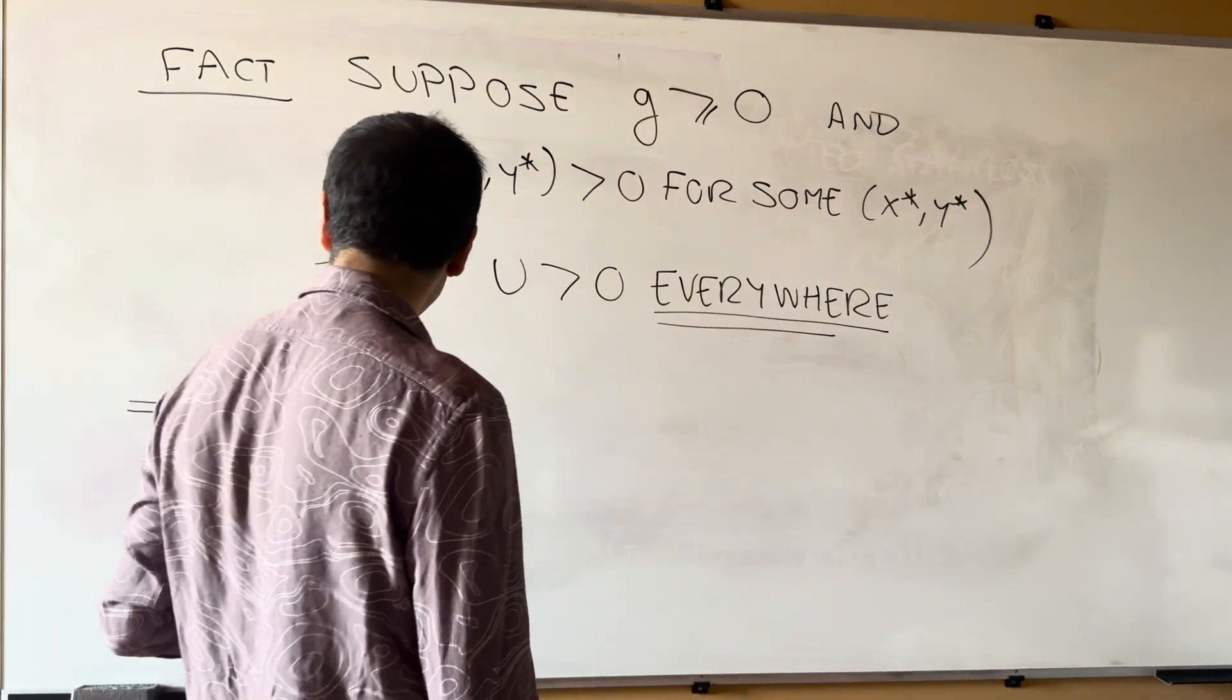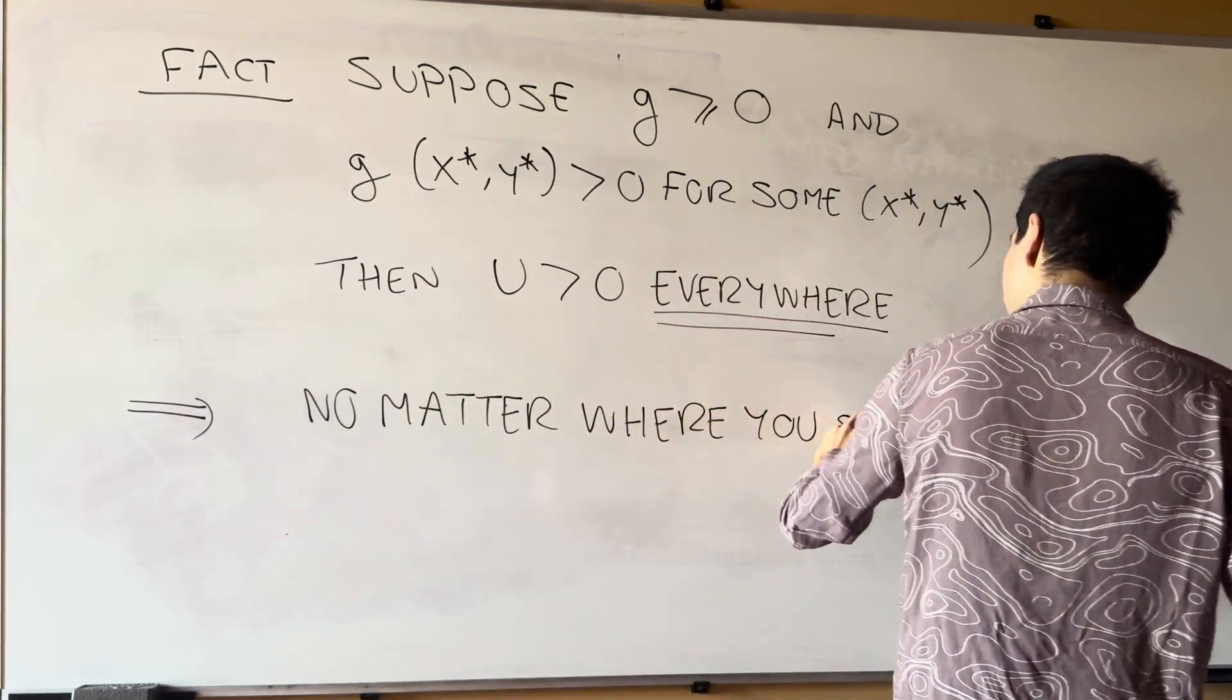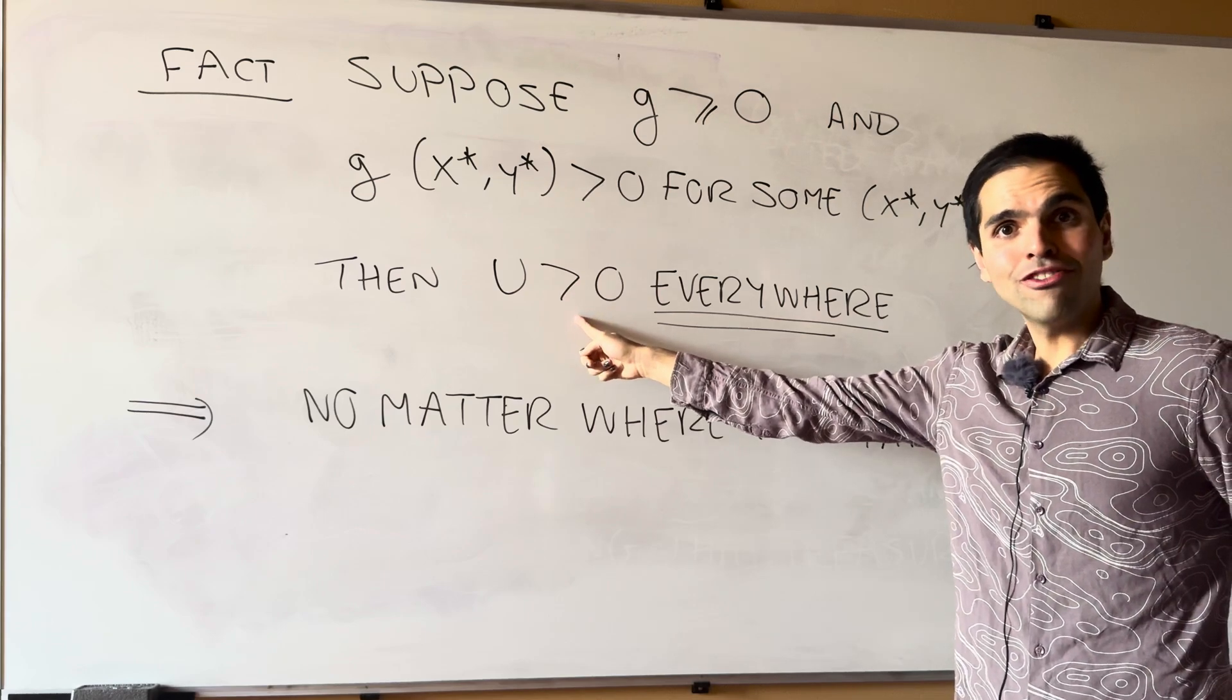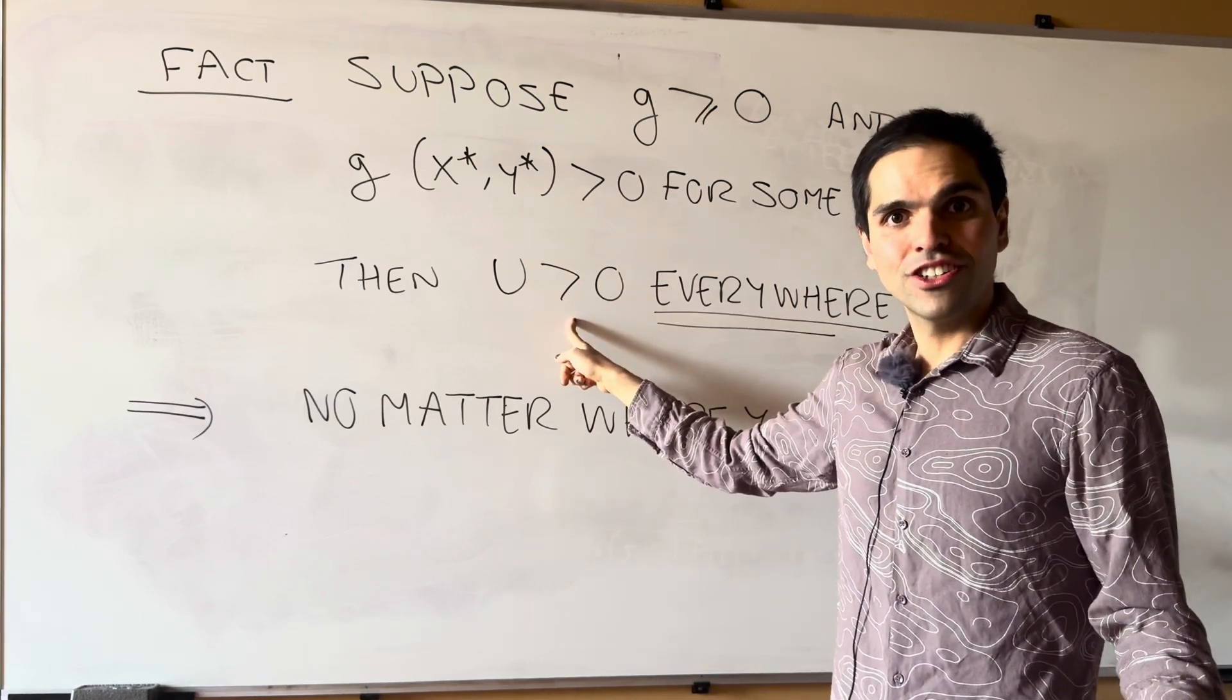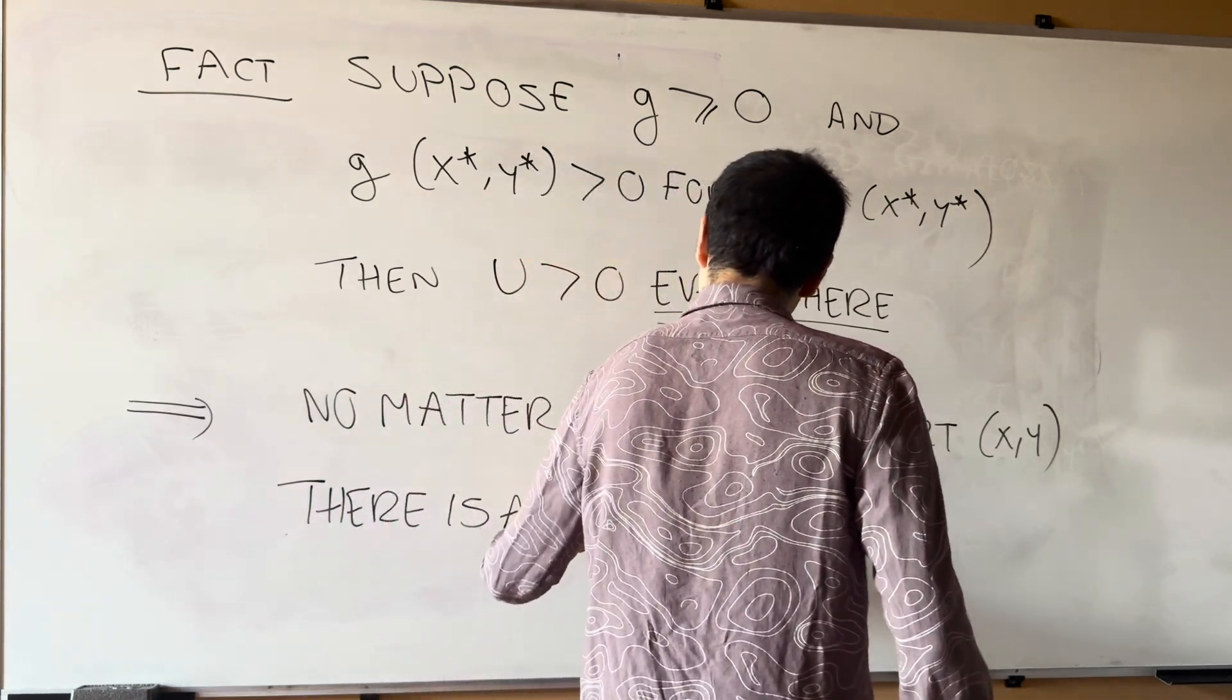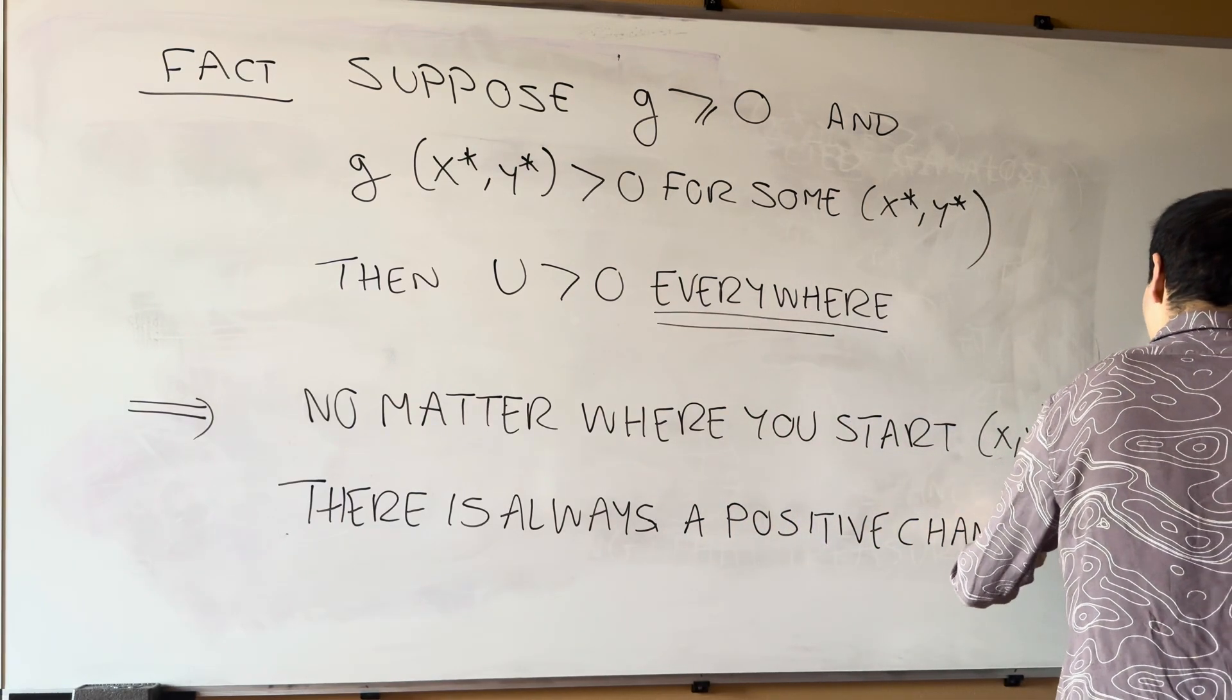So, in other words, the consequence is, no matter where you start, think at some point x, y, the average payoff is always positive. So, in particular, there's always a positive chance of getting that treasure. There is always a positive chance of getting that treasure.